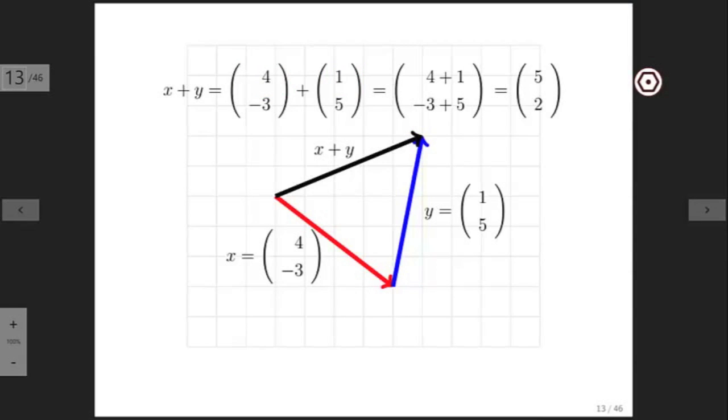Similarly, if you look at the second components of x and y, minus 3 and 5, the minus 3 comes from the fact that x first goes down 3 units. And then the 5 comes from the fact that y goes up 5 units. So the net difference is 2, and that is the second component of the result when you add x to y.